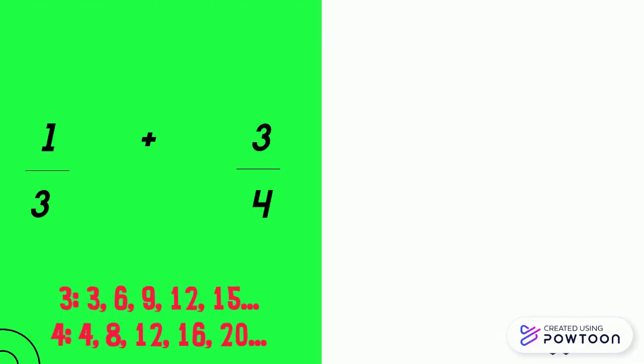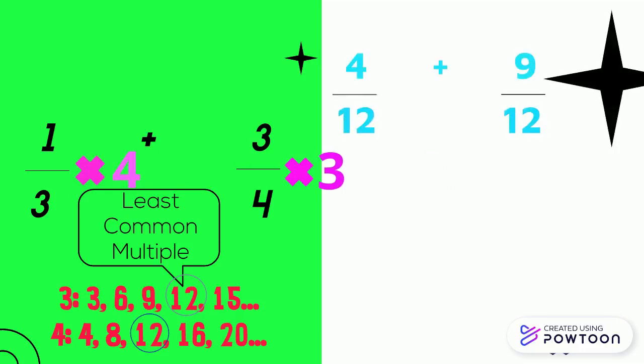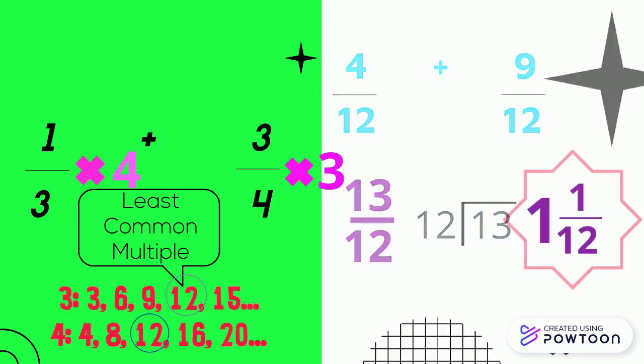Our next fraction, one-third plus three-fourths. We've got to get three and four to the same thing, so we find our least common multiple of twelve. So we multiply by four on the first fraction, three on the second. When we do that, we get four over twelve plus nine over twelve. Add your numerators. Four and nine is thirteen over twelve. Once we divide and simplify that, we get an answer of one and one over twelve.